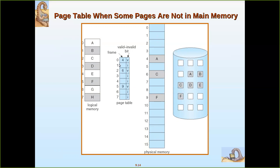After executing page 0, if page 1 is to be executed next — since that is the continuous logical address — the next page is demanded. The system checks through the page table, which forms the mapping to the physical address. It finds the bit is I, meaning invalid, so it knows the page is not present in main memory. The operating system then demands secondary storage to load it. Page B is swapped into a free memory frame, and if B is loaded in frame 0, the page table entry for page 1 is updated to 0 and the bit is set to V.